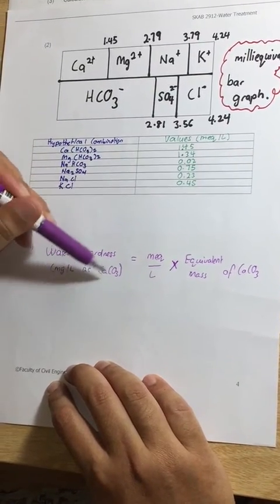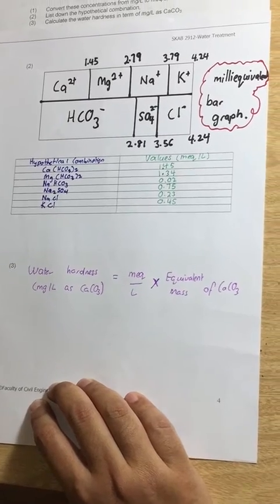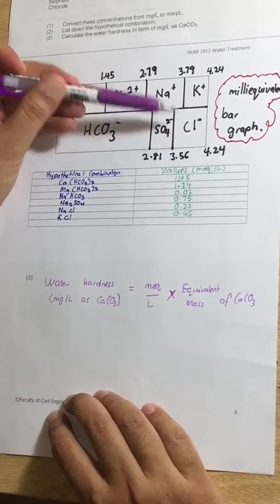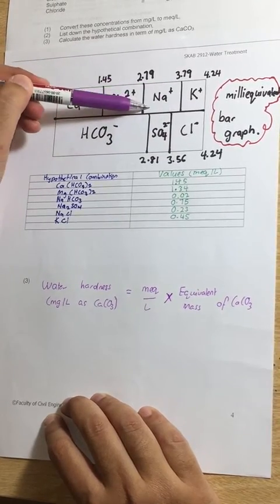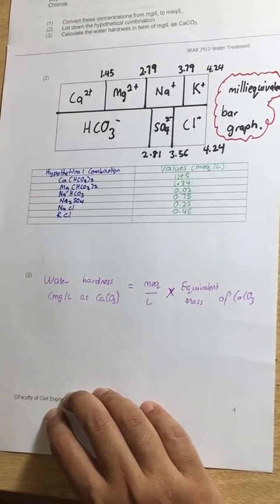So now, water hardness. What causes hardness? Is it bicarbonate, sulfate, chloride, potassium, sodium, magnesium, or calcium?